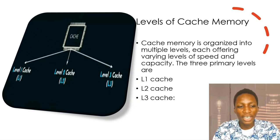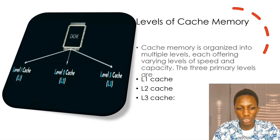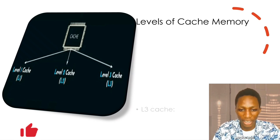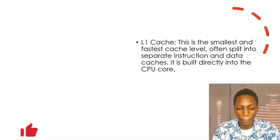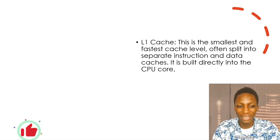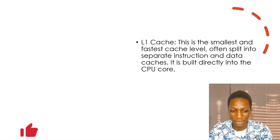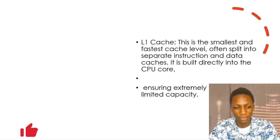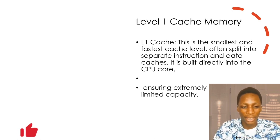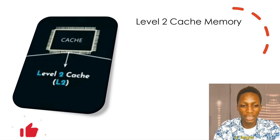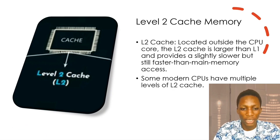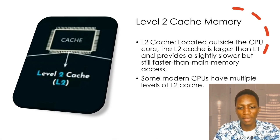Level 1 cache is the smallest and fastest cache level, often split into separate instruction and data caches. It is built into the CPU core, ensuring extremely fast access but limited capacity. Level 2 cache is located inside the CPU core. The L2 cache is larger than the level 1 cache and provides slightly slower but still faster-than-main-memory access.